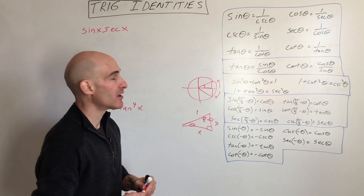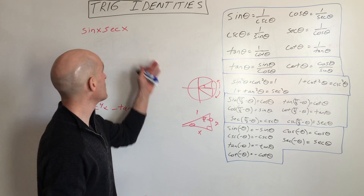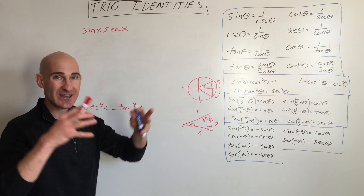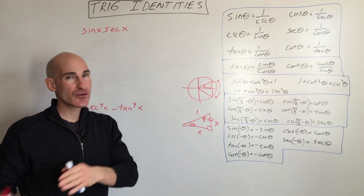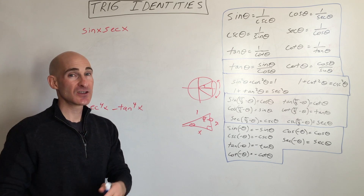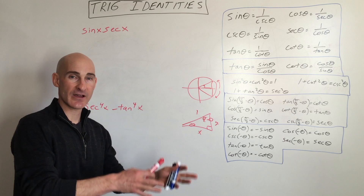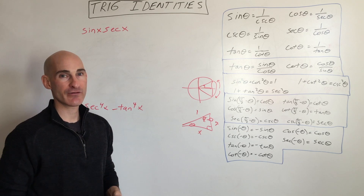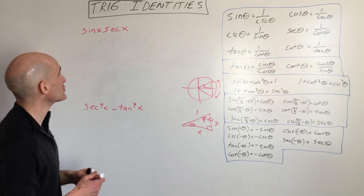Let's do some problems. There are two different types: one is simplifying expressions — condensing them down as much as we can. The other is verifying identities, which is like a trig proof, step by step showing that the left side is identical to the right side. But first, let's do some simplifying expressions.